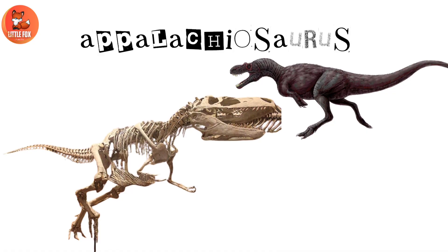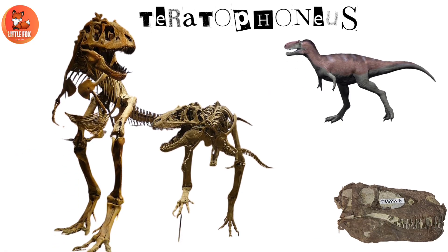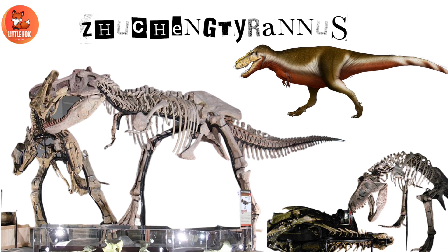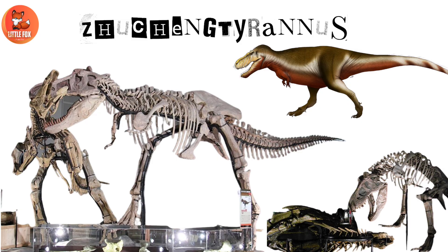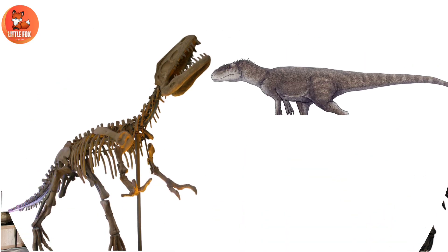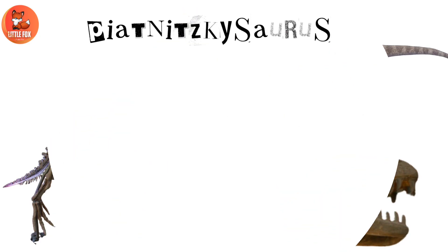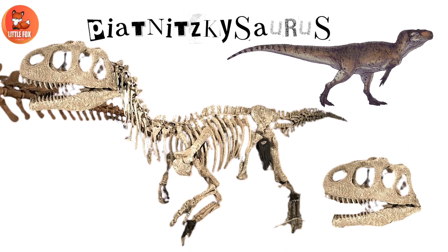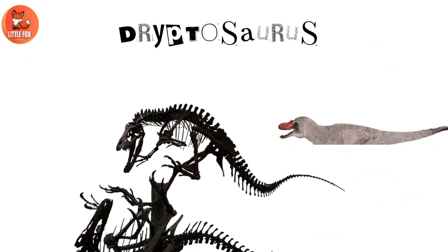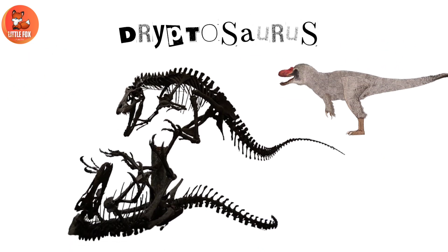Number 31: Teratophonius. Number 32: Zucantyranus. Number 33: Gazosaurus. Number 34: Piatnitskosaurus. Number 35: Dryptosaurus.